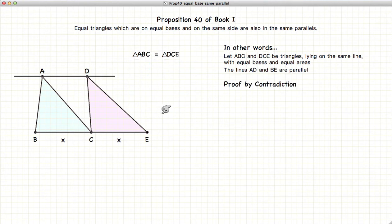We're going to demonstrate this by contradiction, which means we're going to assume that AD is not the parallel line to BE.